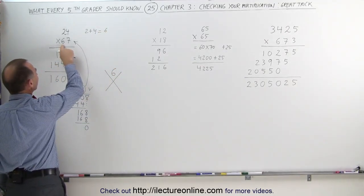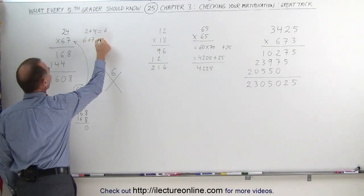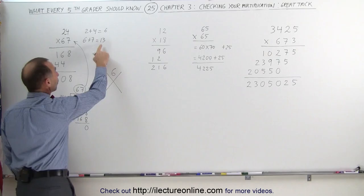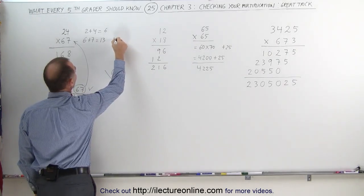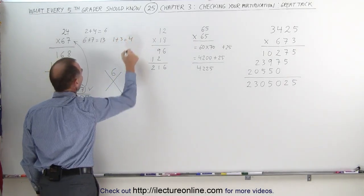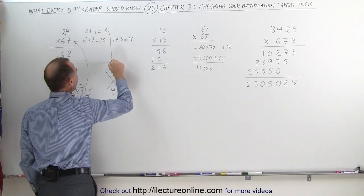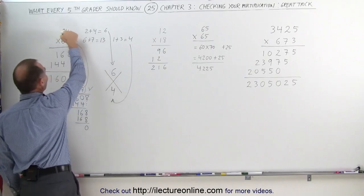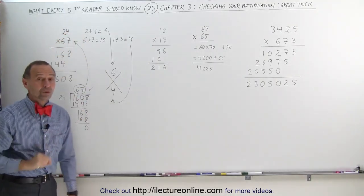Next thing is we take 6 plus 7, which is equal to 13, which is still a number greater than 9. Then we add the 1 and the 3 together, 1 plus 3, we get 4, and that number goes down here. So remember, the 6 goes on top and the 4 goes down at the bottom. That's the result of adding the numbers of the two numbers you're multiplying.